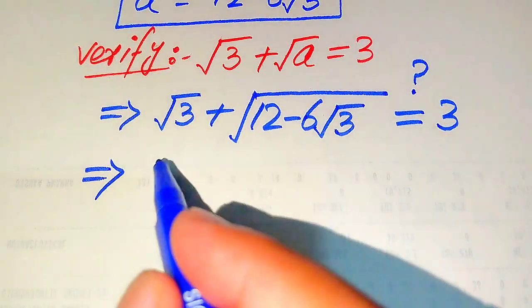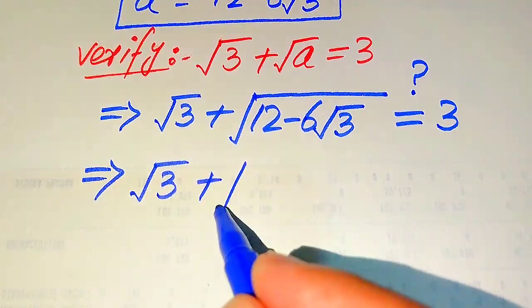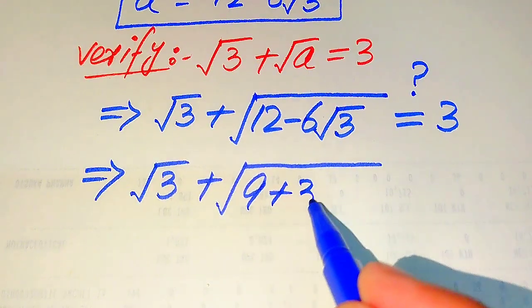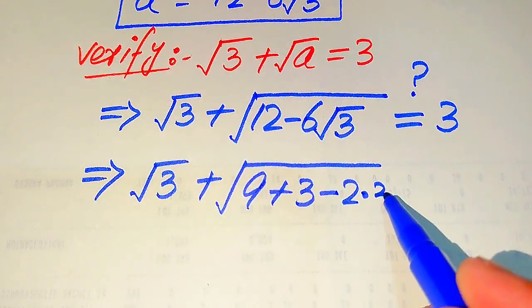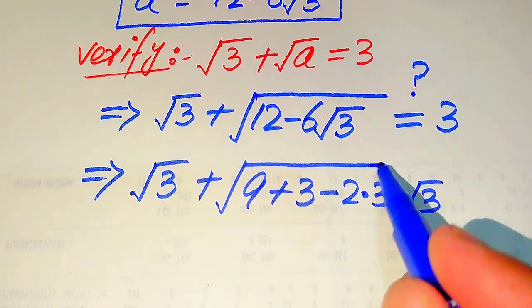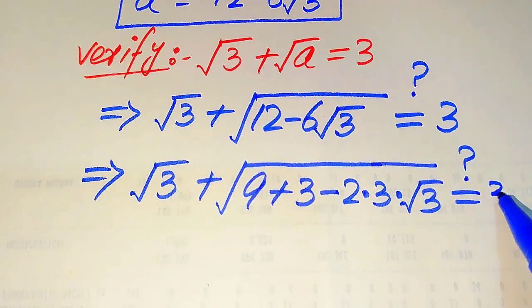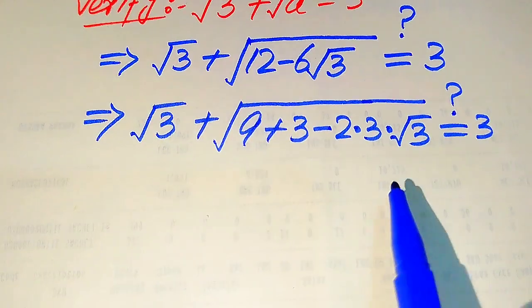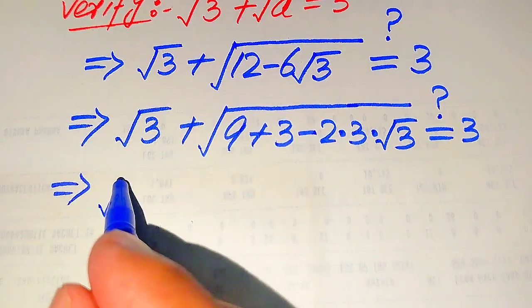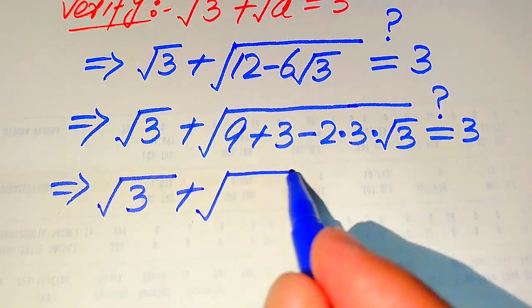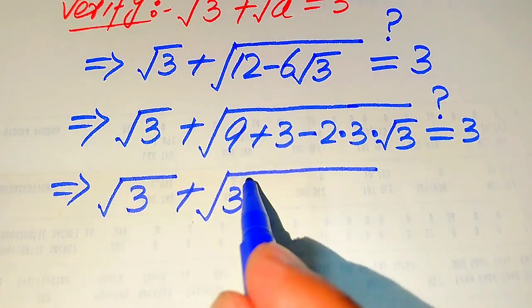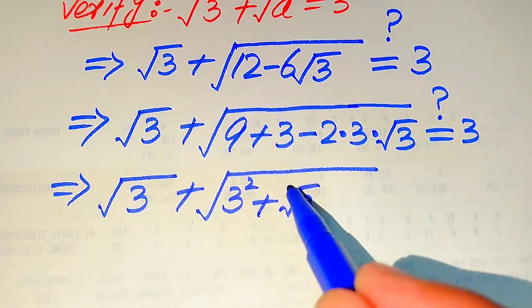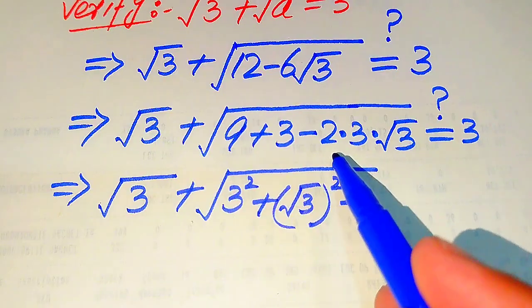So we can write the expression under the square root in this whole square form. We rewrite it as: square root of 3 plus square root of (9 plus 3 minus 6 times square root of 3), where 9 is written as 3 squared, 3 is written as (√3)², and 6 is written as 2 times 3. We rewrite this as 3 squared plus (square root of 3) squared minus 2 times 3 times square root of 3.